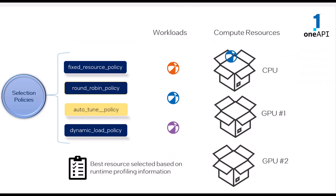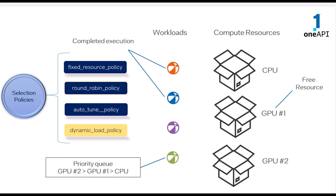Autotune policy relies on runtime profiling information to make the best choices of resource allocation, while Dynamic Load policy selects the resource with the least outstanding submissions. As shown here, after the top two workloads have completed execution, both the GPUs become available. But following the priority queue of the green-colored workload, it will be assigned to GPU 2.